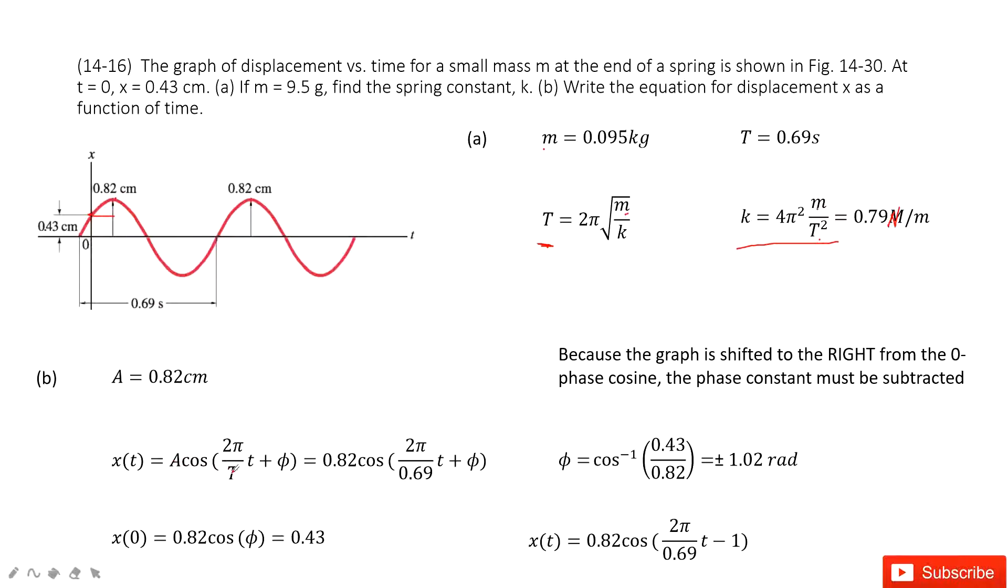A cosine of ωt plus φ. Right, this is it. Then we can say A is given. ω, the angular velocity, is 2π over T. And φ, we don't know. We write it there. So we input the known quantities. We get an answer that looks like this one.